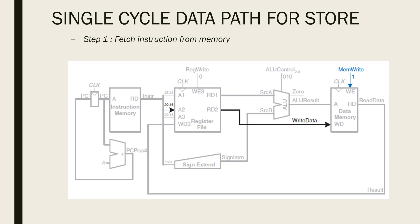What we are doing in this video is we are trying to extend from the design that has already been done for the load instruction to get the store instruction design. Like a load instruction, your store also reads the base address from port one of your register file and it also sign extends the immediate value. Your ALU will add this base address and the immediate value to find the memory address. So all these functions are already supported by the load instruction. The difference is that the store instruction also reads the second register from the register file.